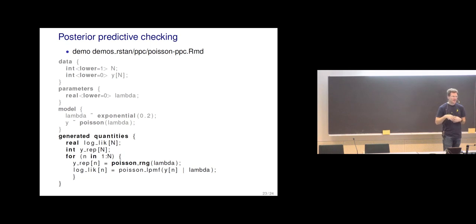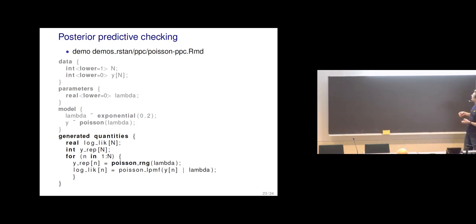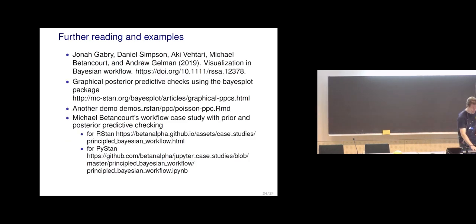Before the break: how do we implement this in Stan? We can generate from the predictive distribution in Stan's generated quantities block. For Poisson count data, in the model block we have Y distributed as Poisson with parameter lambda, and in the generated quantities block we can get Y_replicate: looping N from 1 to N, using the Poisson random number generator to generate from the data. At the end of the slide there are additional references.